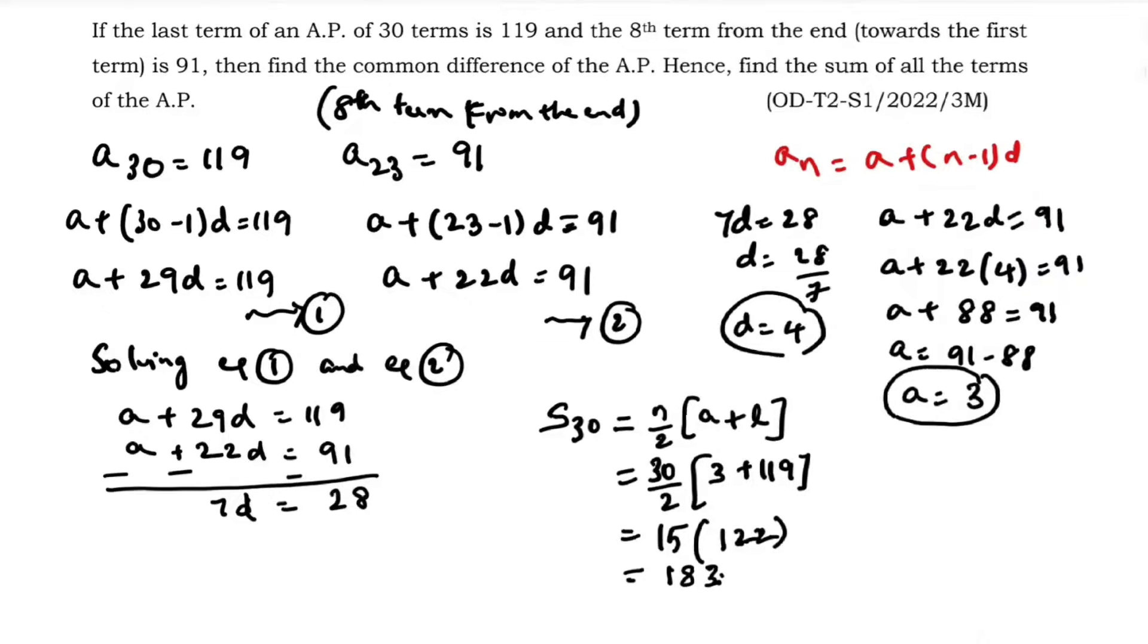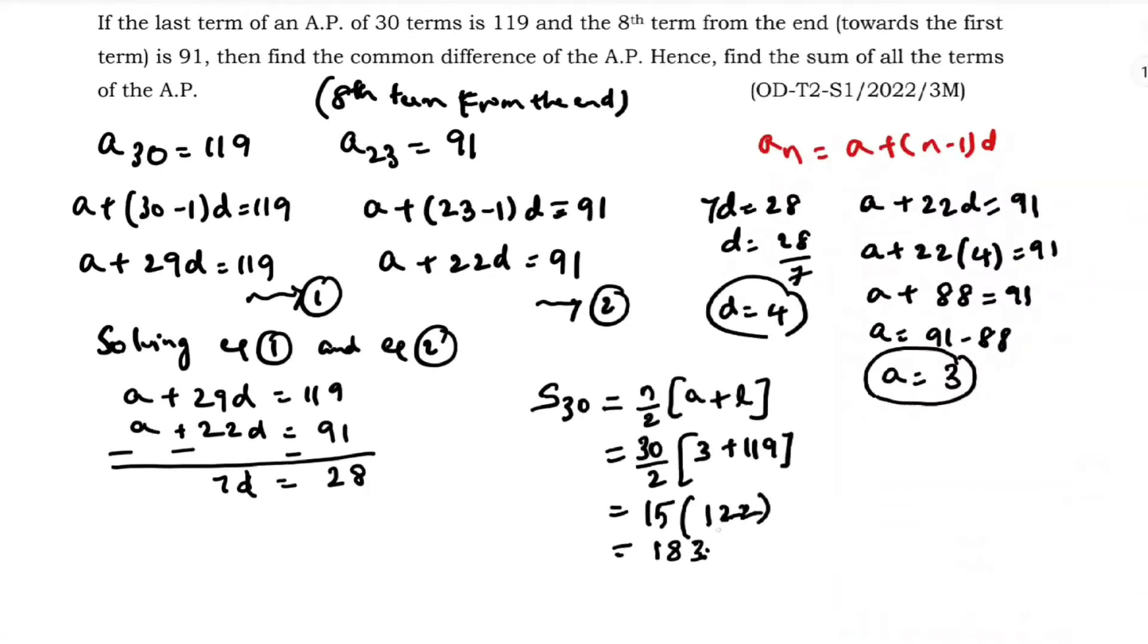So s30, the sum of all the terms, is 1830.